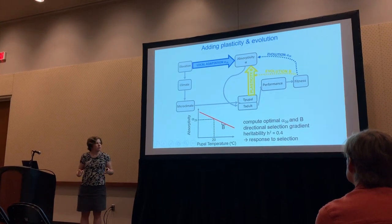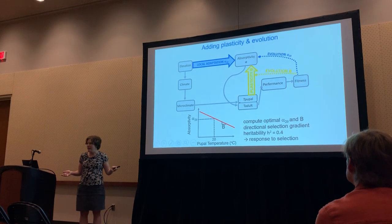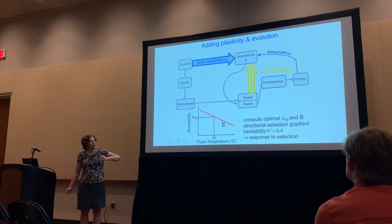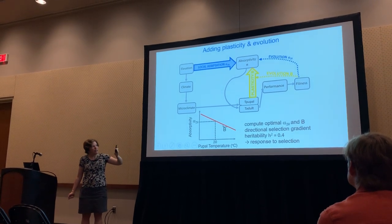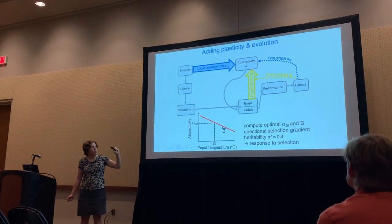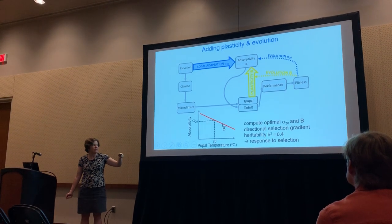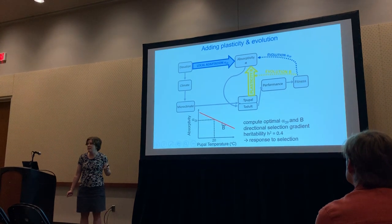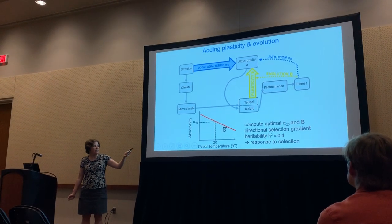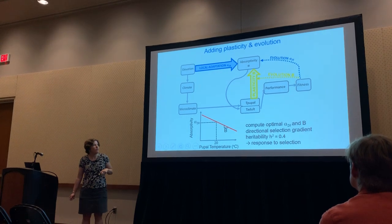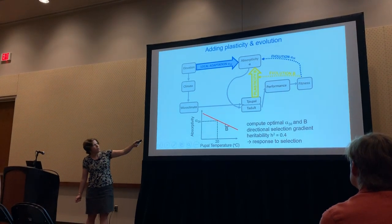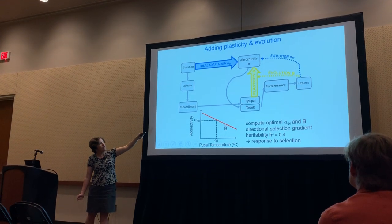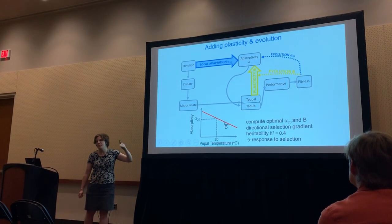We don't have a great understanding of the underlying genetics for absorptivity, so we use quantitative genetic models. We look at a variety of absorptivity levels in a given place and time, compute the optimal absorptivity and optimal plasticity, and use directional selection gradients to predict response to selection. We use empirically derived estimates of heritability of about 40%. In this model, our fitness estimates feed back to influence absorptivity both via evolution and via shifts in the plasticity slope.